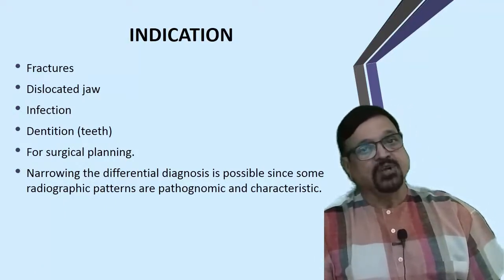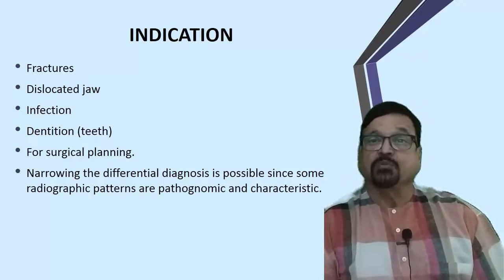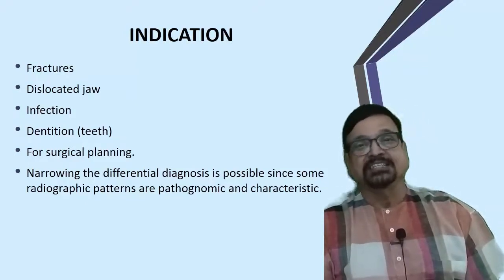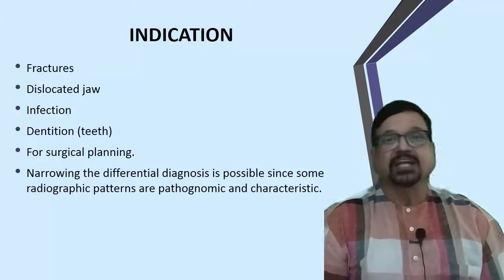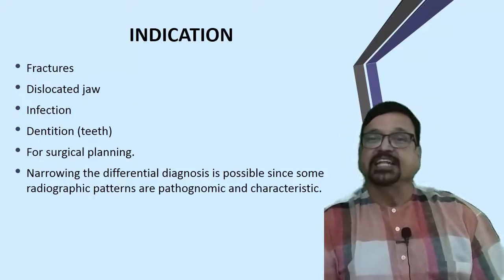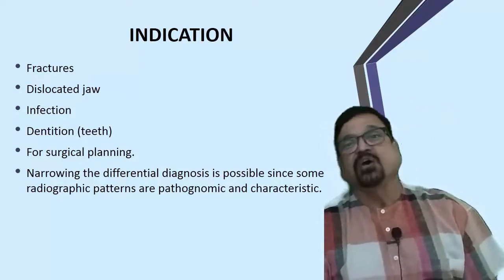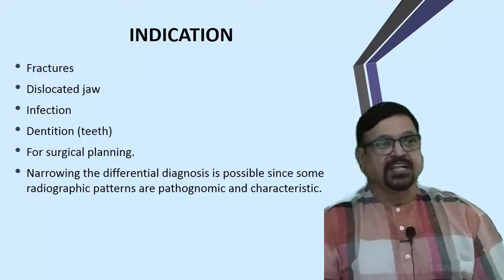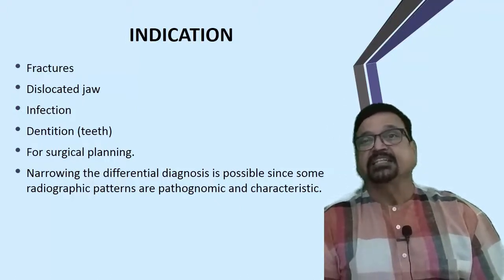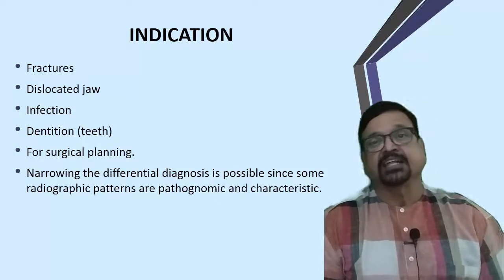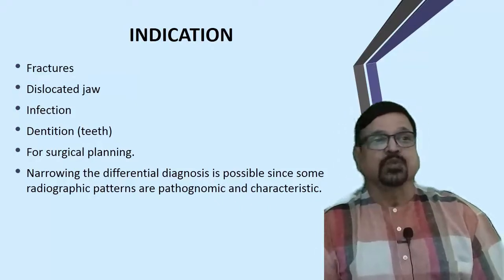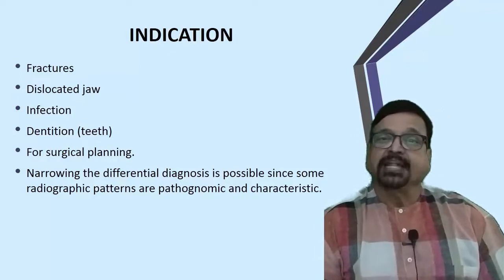Indications include fracture of the mandible and fracture of the TMJ - in that case OPG is very good because the patient cannot open the mouth. Second is dislocated jaw - again the patient cannot open the jaw so OPG is needed; whether the dislocation is unilateral or bilateral, movement will be seen accordingly. Third is infection - dental infection, mandible infection, or TMJ infection, all excellently detected by OPG. Fourth is dentition, which is useful for orthodontic work as well as assessment of depth, pulp involvement, and root environment.